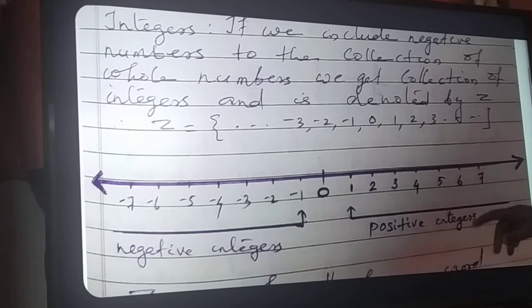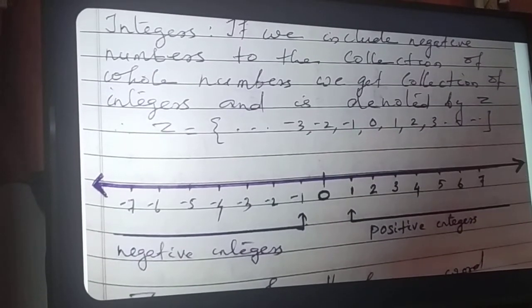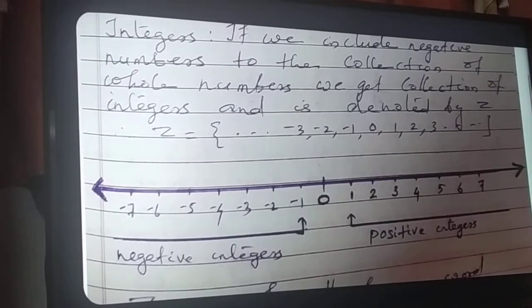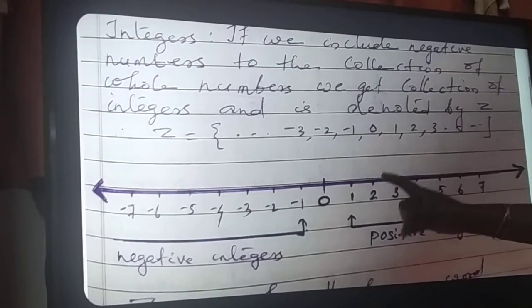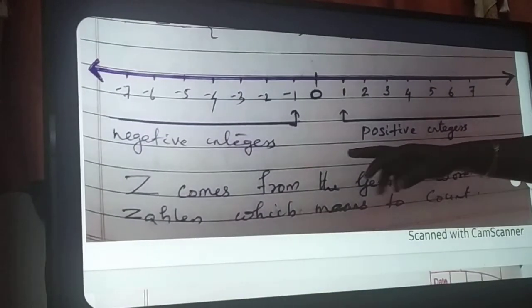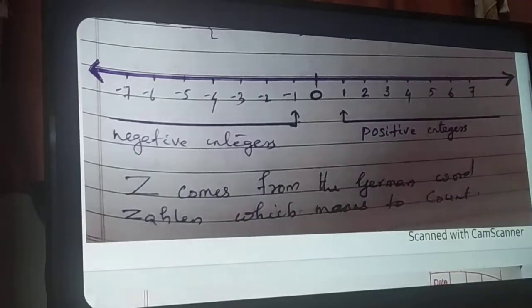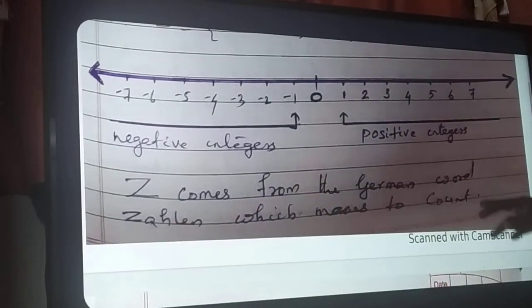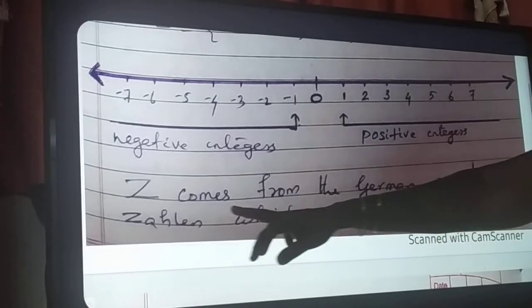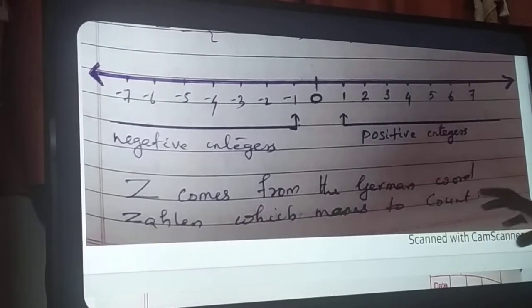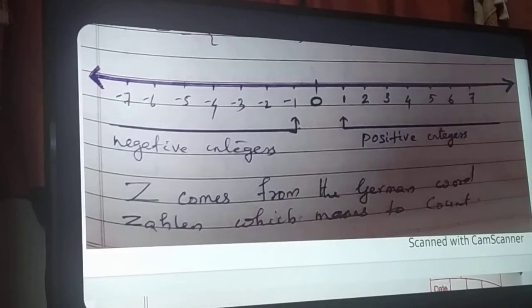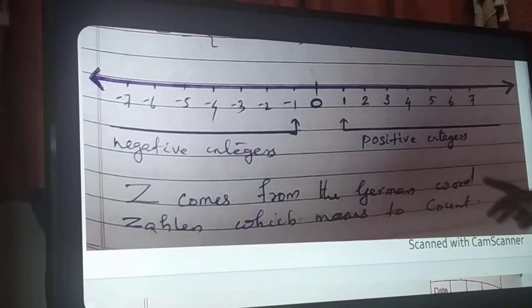So on this number line, which number is the smallest? Minus 7 is the smallest shown — minus 7 is less than minus 6, minus 7 is less than 0, minus 7 is less than 1, etc. The letter Z comes from the German word 'Zahlen', which means to count — that is, count the numbers. Therefore, the letter Z came from the German word Zahlen.